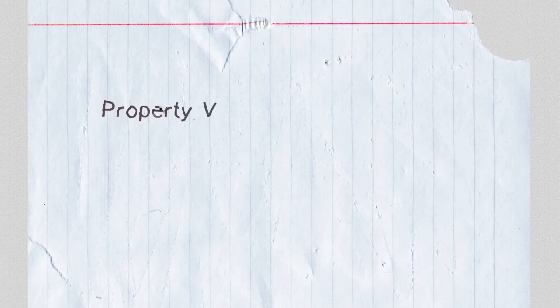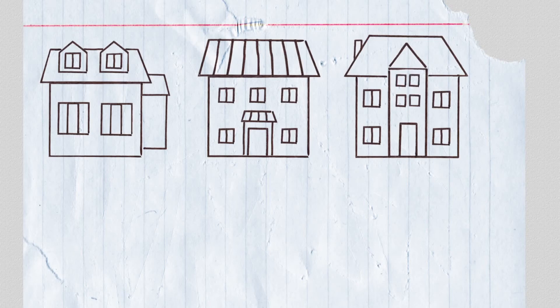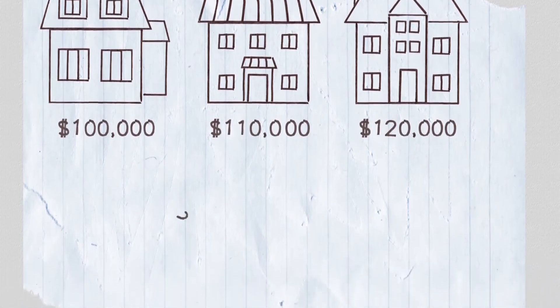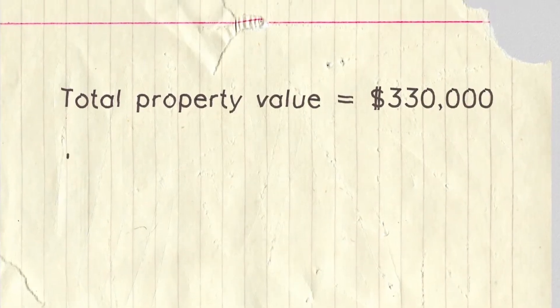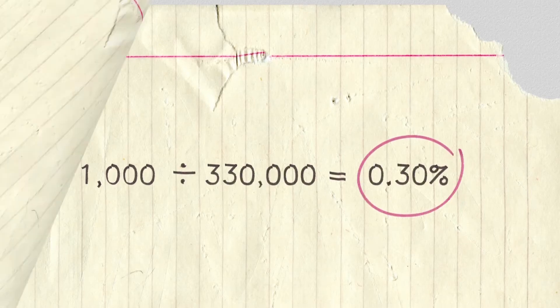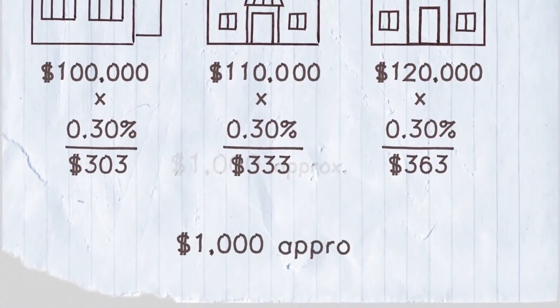I want to explain to you how your property taxes are calculated based on how much your home is worth. Imagine there's a town that only has three homes, and they're each worth a different amount. The total cost to provide all of their town's services is $1,000. This is collected through property taxes — each homeowner pays based on how much their home is worth. The value of all the homes are added up and divided by the town's cost, which gives us the tax rate.